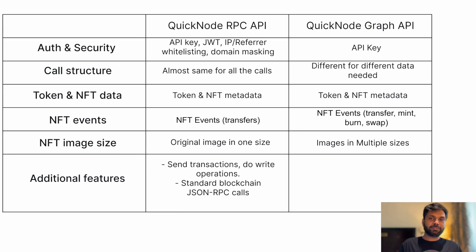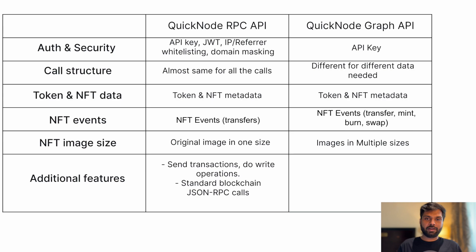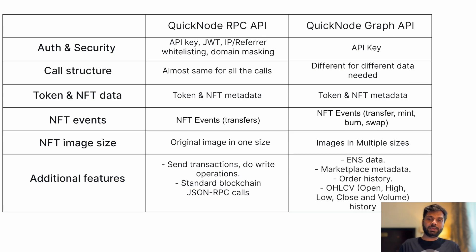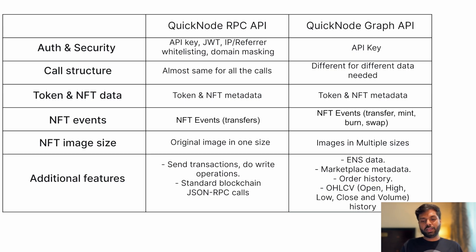Some additional features of Quicknode's GraphQL API are: you can query ENS data, you can get marketplace metadata and order history, and you can get open, high, low, close, and volume history of NFTs.